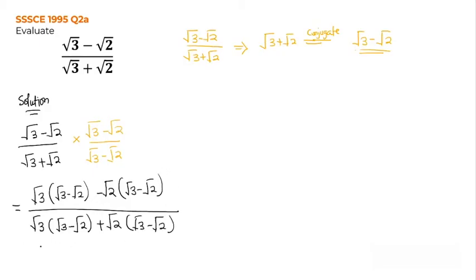This is now equal to: root 3 multiplied by root 3 gives 3, since root 3 squared equals 3. Root 3 multiplied by root 2 gives negative root 6. Then negative root 2 multiplied by root 3 gives negative root 6. And negative root 2 multiplied by negative root 2 gives positive 2.